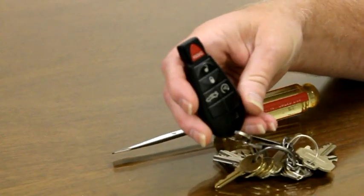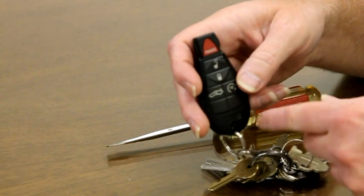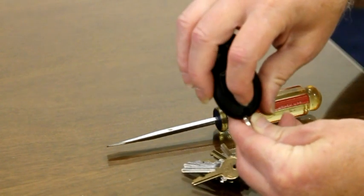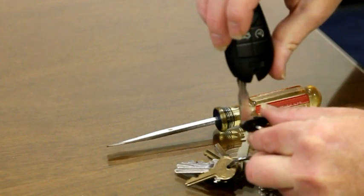On the key fob itself, on the side with the buttons is a little slide switch right here. If you take that switch and move it to the right with your fingernail, a little key comes out. It's hidden inside the key fob.